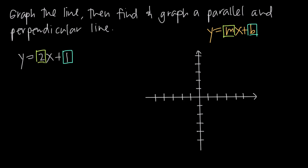With only those two pieces of information, we can go ahead and graph the line. We start with the y-intercept, which is 1 — we come up to positive 1 along the y-axis and plot a point. The slope is positive 2. To get positive 2, we can use either of two fractions: 2 over 1, or negative 2 over negative 1. Both of these fractions are equal to positive 2.